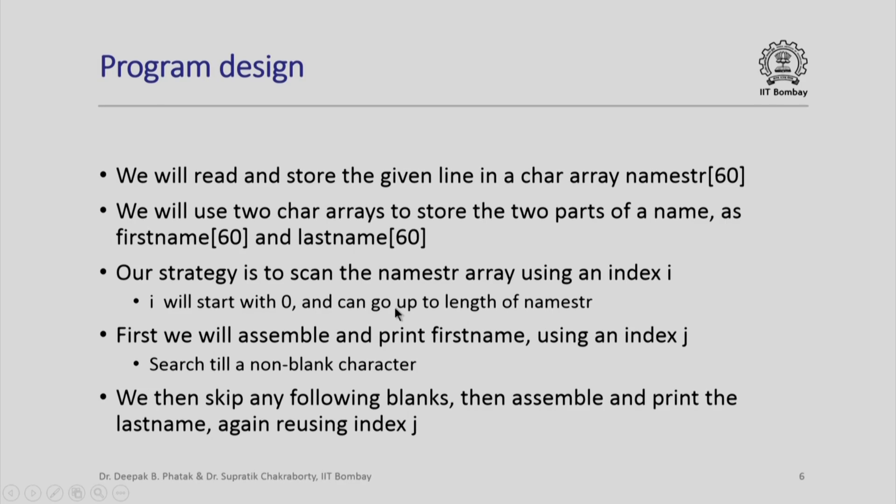Our strategy is simple. We will scan the namestring array using an index i. i will start with 0, keep on looking at each subsequent character in the namestring array, and we will go on up to the length of the namestring. While we scan this array, we will first assemble and print the first name, for which we will use an index j. We will search for non-blank characters because the first name will contain non-blank characters.